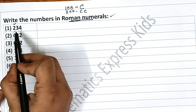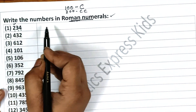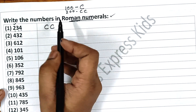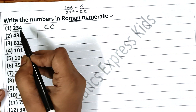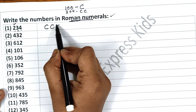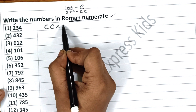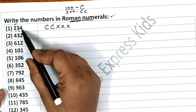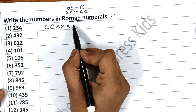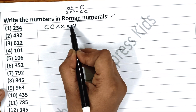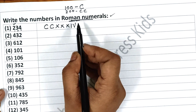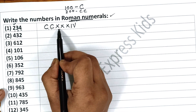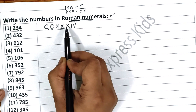So for 234, first write 200 as CC. Now for 34: 10 is X, so I have to write 10, 10, 10 — that is 30. And now 4: before writing 4, I have to write 5 and subtract 1 from it. So this is our 234.